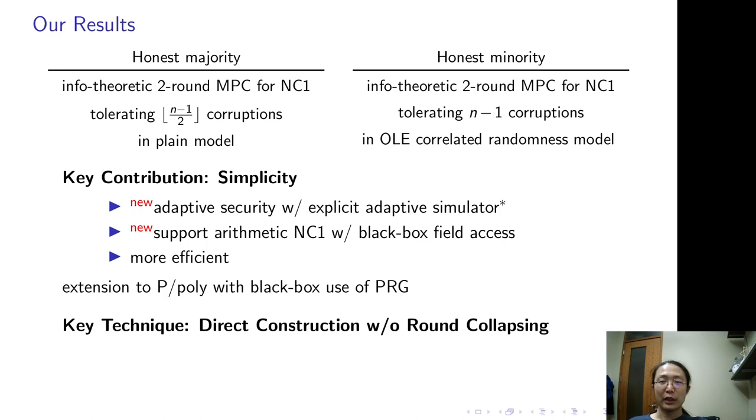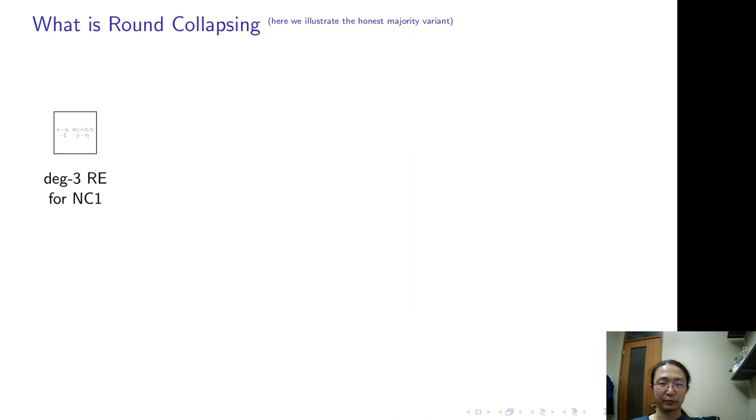Our key technique is a direct construction without round collapsing. So a natural question here - what is round collapsing?